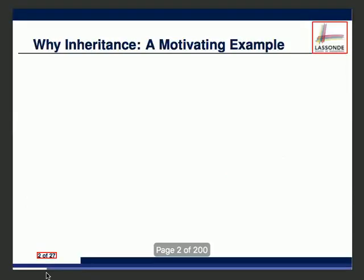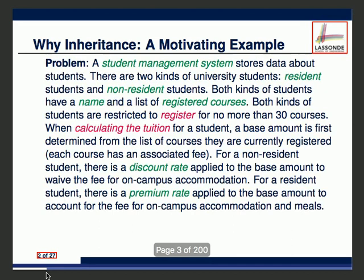Let's go over the first part. The first part is about how we can do code reuse using inheritance. I'll present a solution that does not use inheritance first, so we can see how bad it is. Then we introduce inheritance. After that, we'll go to the second aspect — polymorphism and dynamic binding. The second part is more interesting, but let's get through the first part.